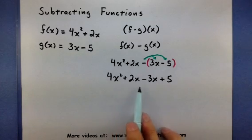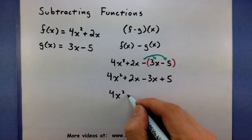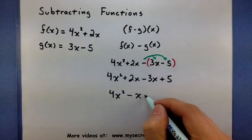So now I have 4x squared plus 2x minus 3x and plus 5. Now look at that. 2x minus 3x. Those will combine.